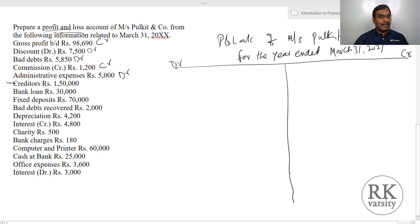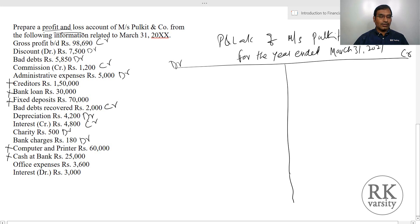Creditors is a liability in the balance sheet — not in the profit and loss account. Bank loan is a liability — appears in the balance sheet, not here. Fixed deposit is an asset in the balance sheet — not here. Bad debts recovered is income — credit side. Depreciation is an expenditure — debit side. Interest received is income — credit side. Charity is an expenditure. Bank charges is an indirect expense — debit side. Computer and printer is an asset shown in the balance sheet. Cash at bank is also an asset in the balance sheet. Office expenses and interest paid are debit side.